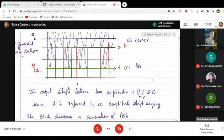Now what is it that you are concluding? The output shifts between the two amplitudes. This is what you observe.